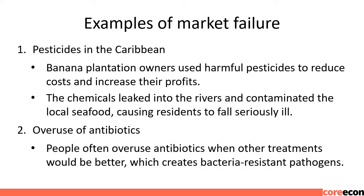Examples of Market Failure. First, pesticides in the Caribbean: banana plantation owners used harmful pesticides to reduce costs and increase their profits. The chemicals leaked into the rivers and contaminated the local seafood, causing residents to fall seriously ill. Second, overuse of antibiotics: people often use antibiotics when other treatments would be better, which creates bacteria-resistant pathogens.